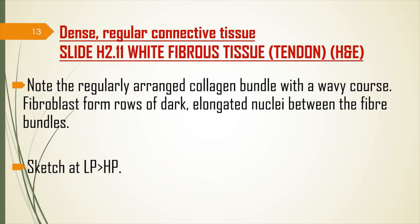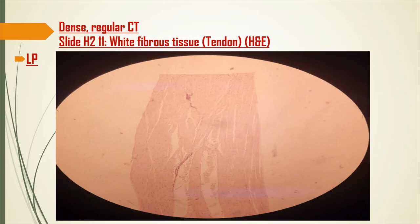Dense regular connective tissue is seen in a tendon. Note the regularly arranged collagen bundles with a wavy course. Fibroblasts form rows of dark elongated nuclei between the fiber bundles. Sketch this at both low and high power. At low power in the tendon, the fibers are arranged in a very regular shape, and you can see dots between them — those are fibroblasts.